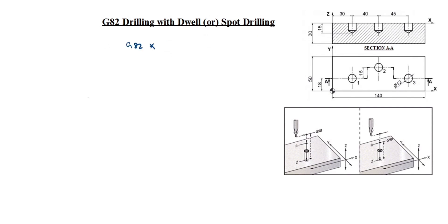G82 X Y Z R P F. X is hole position in X axis, Y is hole position in Y axis. Z is from R plane, tool will travel with feed to Z depth. R is position of R above the workpiece or job surface.